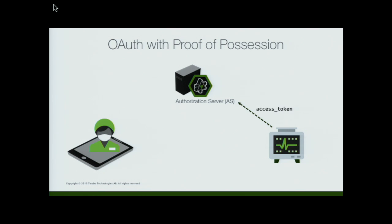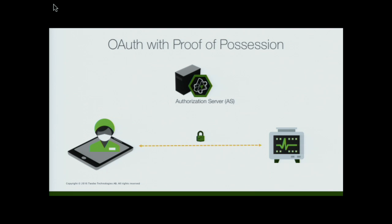And when the device sees it — if it's a connected device, as in this case — it can ask the OAuth server: is this access token something I should trust? And the OAuth server says yes. And when you do, here's the key that you should use when you talk to that device. And then the device says okay, great. And now they can start communicating securely using that shared key — asymmetric or symmetric — and no one else knows that. Thus the name proof of possession.